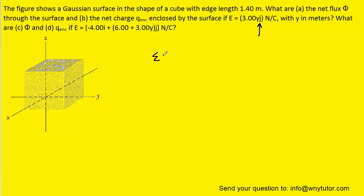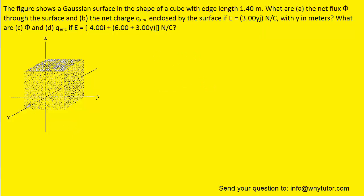The total flux in the x-direction equals zero, and the total flux in the z-direction also equals zero. We only need to concern ourselves with the electric flux in the y-direction. Because the cube has an edge length of 1.4 meters, the distance from the origin to either face along the y-axis is 0.7 meters.